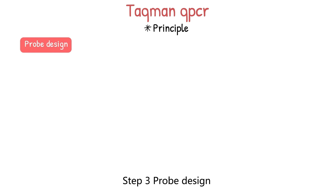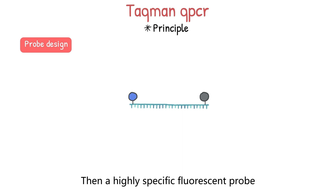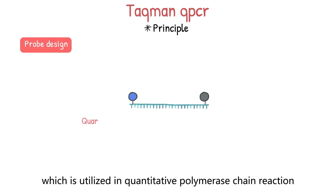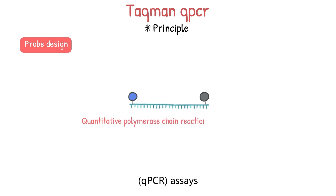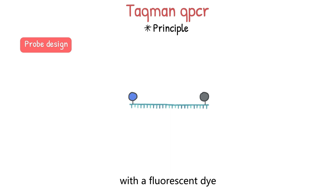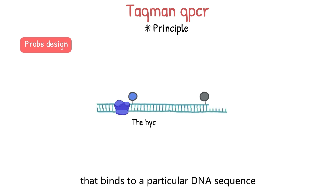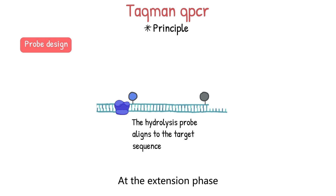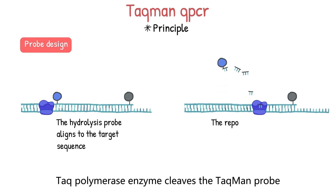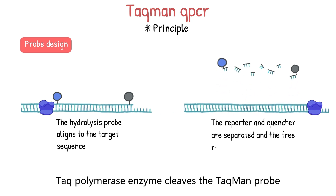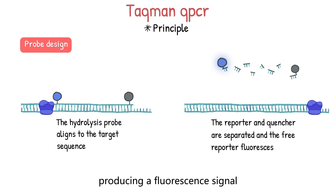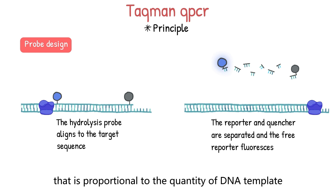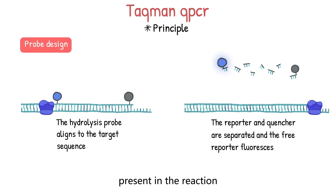Step 3 is probe design. A highly specific fluorescent probe called TaqMan has been designed, which is utilized in quantitative polymerase chain reaction, or qPCR, assays. TaqMan is an oligonucleotide labeled with a fluorescent dye that binds to a particular DNA sequence during the annealing stage of the qPCR process. At the extension phase, Taq polymerase enzyme cleaves the TaqMan probe and releases the fluorescent dye, producing a fluorescent signal that is proportional to the quantity of DNA template present in the reaction.